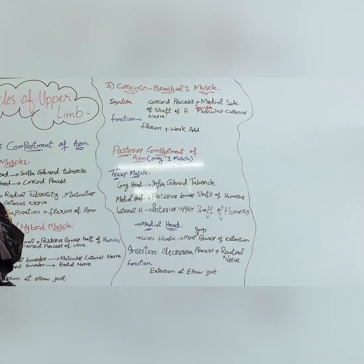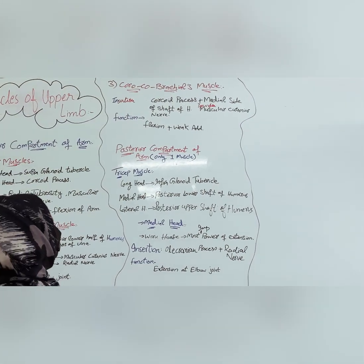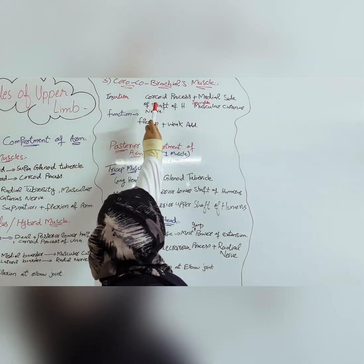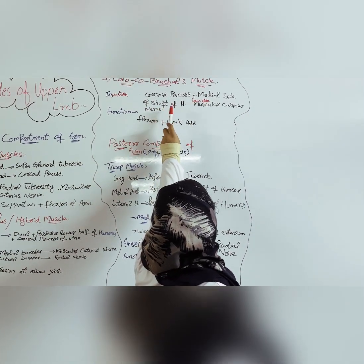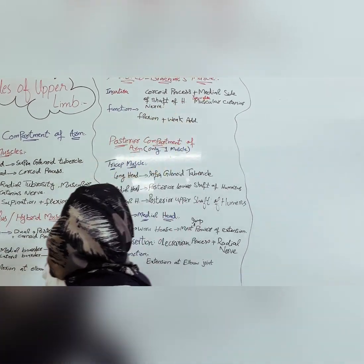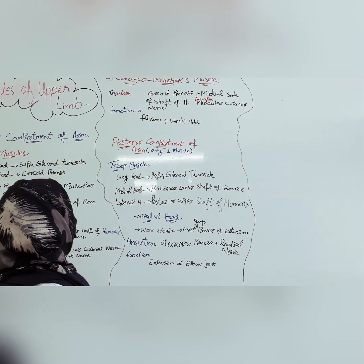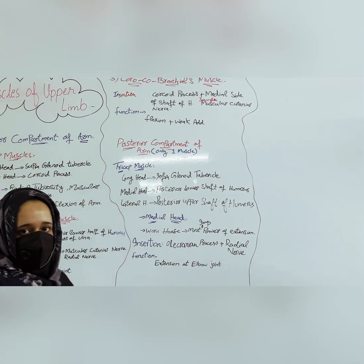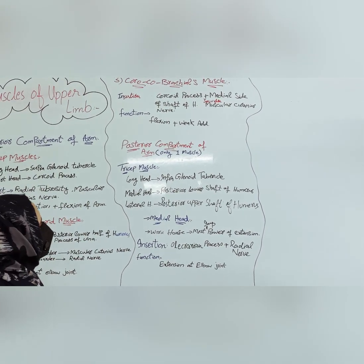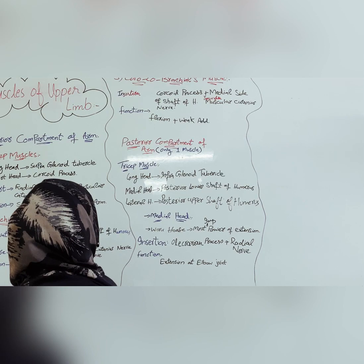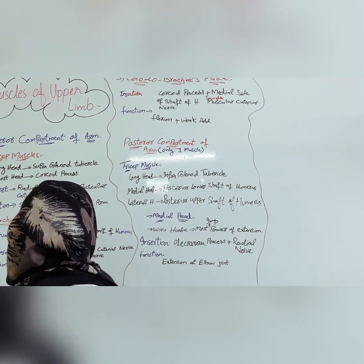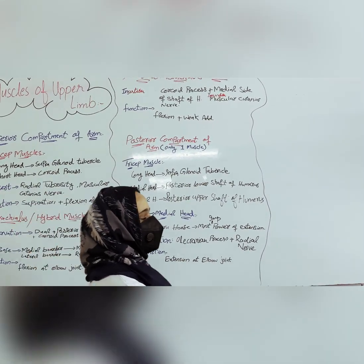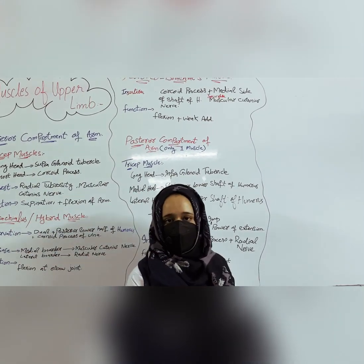The next muscle is the coracobrachialis. Its insertion is on the medial side of the shaft of the humerus, and the coracoid process is its origin. Its innervation is the musculocutaneous nerve. The function of the coracobrachialis is flexion and weak adduction.